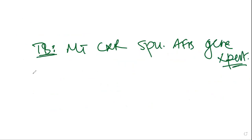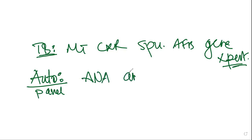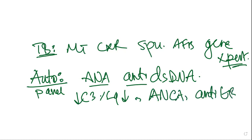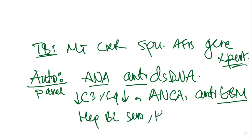Next, order an autoimmune panel, especially if glomerulonephritis is suspected. This panel includes ANA, anti-dsDNA, C3 level, and C4 level — which will be low in active SLE and lupus nephritis. Also check ANCA, anti-GBM (anti-glomerular basement membrane antibody), hepatitis B and C serology, and HIV serology, as these can all be associated with glomerulonephritis.